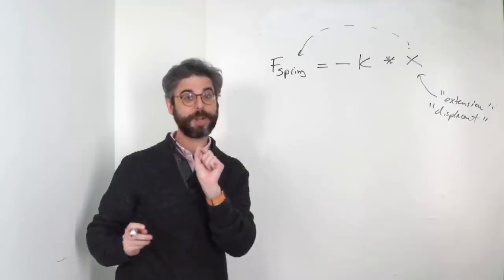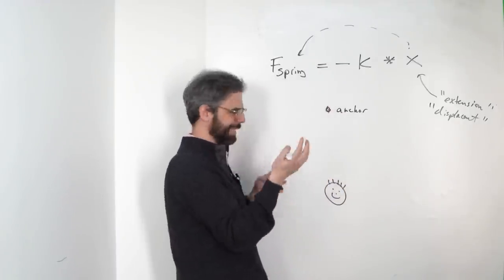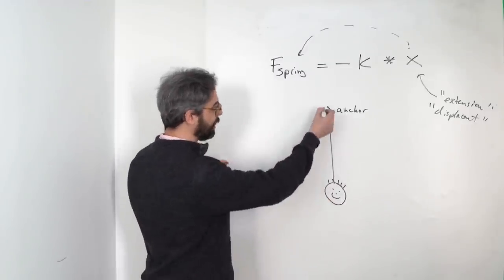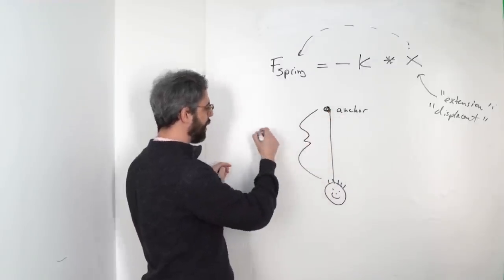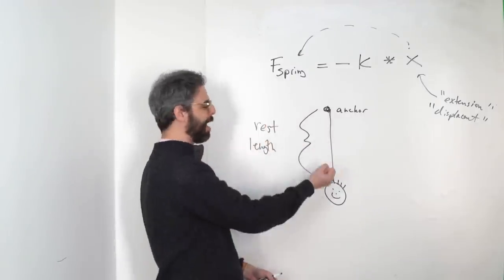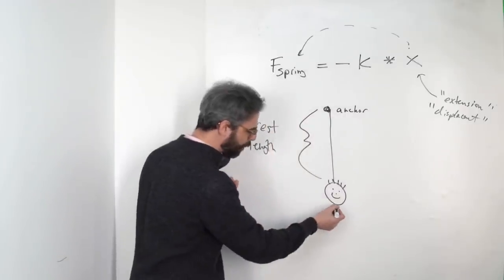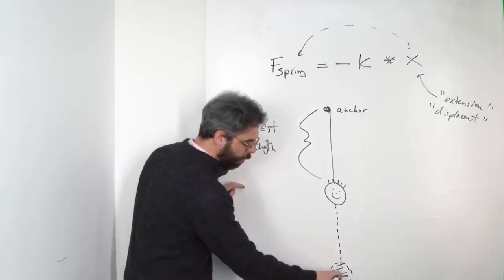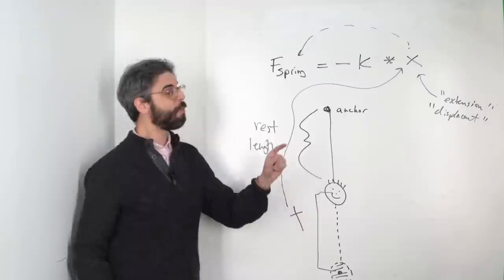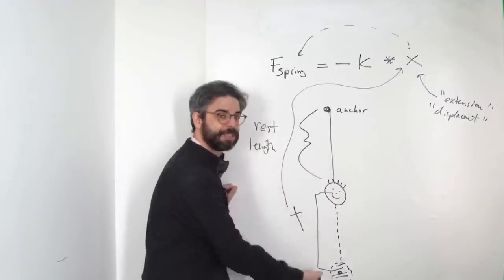A spring is made up of three things: an anchor, a bob, and the spring itself — the boingy thing. If the spring is at rest, meaning it's not moving at all, we have something called the rest length, which is the distance between one end and the other — between the anchor and the bob. If I pull it down and release, it springs back up; if I contract it, it springs back out. That contraction or extension is the displacement. The negative sign is there because even though the extension is positive, the force pulls back in the opposite direction.